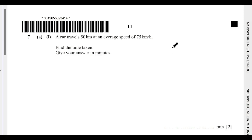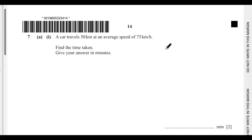Welcome back, this is question 7a. If this is the first video you are seeing in the playlist, please go to my YouTube channel — there is a playlist titled IGCSE Mathematics Paper 4, May/June 2024. There are six videos there for questions one to six. Question 7a, part (i): a car travels 50 kilometers at an average speed of 75 kilometers per hour.